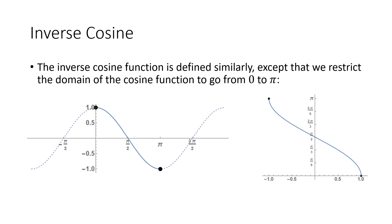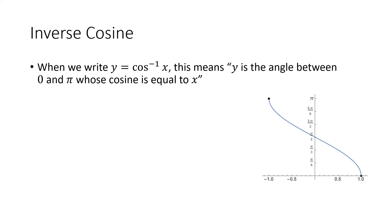Inverse cosine is defined in a very similar way, except instead of restricting the domain to negative pi over 2 to pi over 2 — which wouldn't work because flipping the function would still cause the vertical line to cross the graph more than once — we make the domain go from 0 to pi. That gives a flipped-over graph for x equals cosine of y, and when the domain is restricted, that does give us a function. When we write y equals inverse cosine of x, y is specifically the angle between 0 and pi whose cosine equals x.